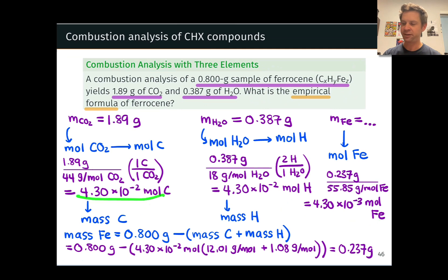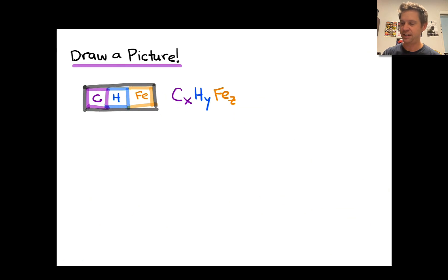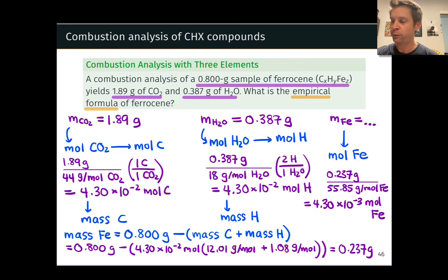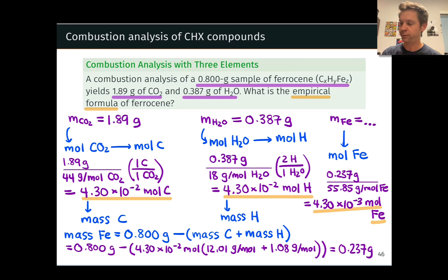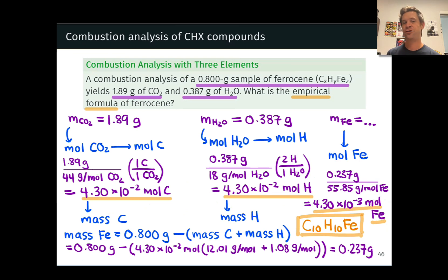Now we have the number of carbon atoms, hydrogen atoms, and iron atoms in the sample. We have enough information to deduce the empirical formula. The typical approach is to divide by the smallest number of moles — here, 4.3×10⁻³ moles of iron, which is the smallest. Dividing all mole quantities by this value: iron goes to 1, moles of hydrogen go to 10, and moles of carbon go to 10. The empirical formula is therefore C10H10Fe.